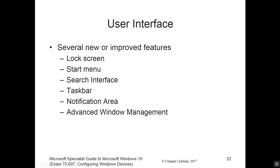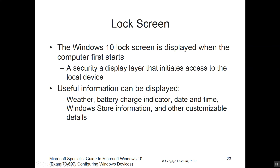The user interface has many new or improved features. We've got a lock screen, start menu, search interface, taskbar, notification area, and advanced Windows management. The Windows 10 lock screen is displayed when the computer first starts, and can show important information like weather, battery charge indicator, and date and time.